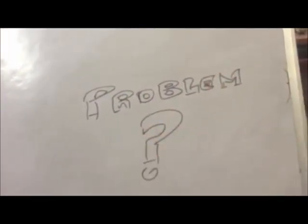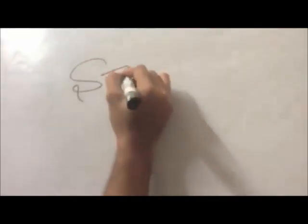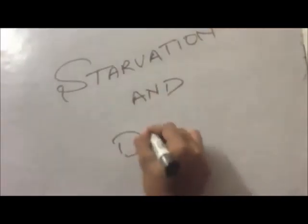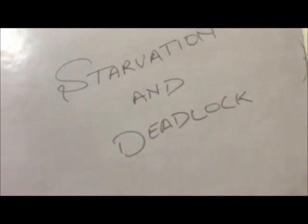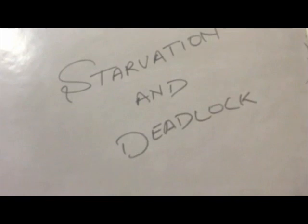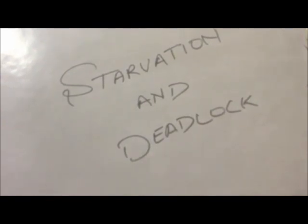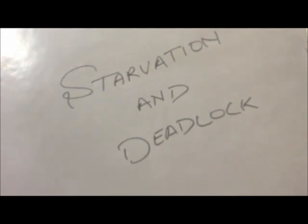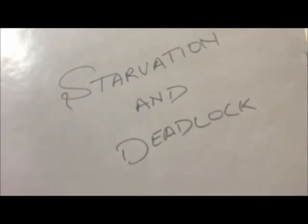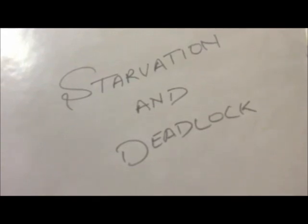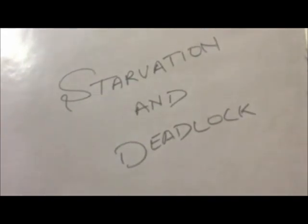There are a few problems associated with this situation: starvation and deadlock. Starvation is a situation where one philosopher never gets the chance to eat, and thus eventually starves and dies. Deadlock is a state where one philosopher is waiting for the others to complete eating, and the others in turn are waiting for the first one, thus forming an unending cycle.